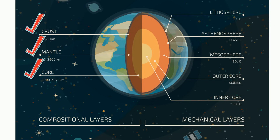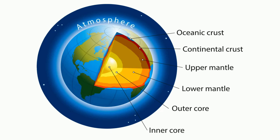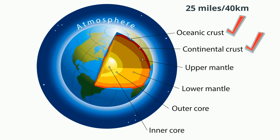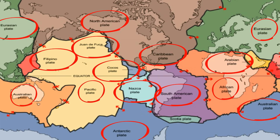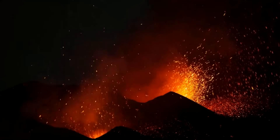The outermost layer of the Earth is called the crust. There are two types of crust: continental and oceanic. The crust averages around 25 miles or 40 kilometers in thickness and can be divided into 15 major tectonic plates that are rigid in the center and have geological activity at the boundaries, such as earthquakes and volcanoes.